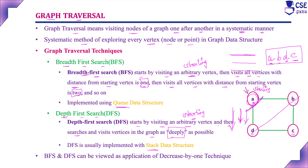For depth first search on the same graph, consider A as the starting vertex. Visit A first. The vertices connected to A are B and D. Alphabetically, B is visited first. From B, the connected vertices are A and C. A is already visited, so visit C. From C, D is unvisited, so visit D. From D, A is connected but already visited. So this depth path A, B, C, D is complete.